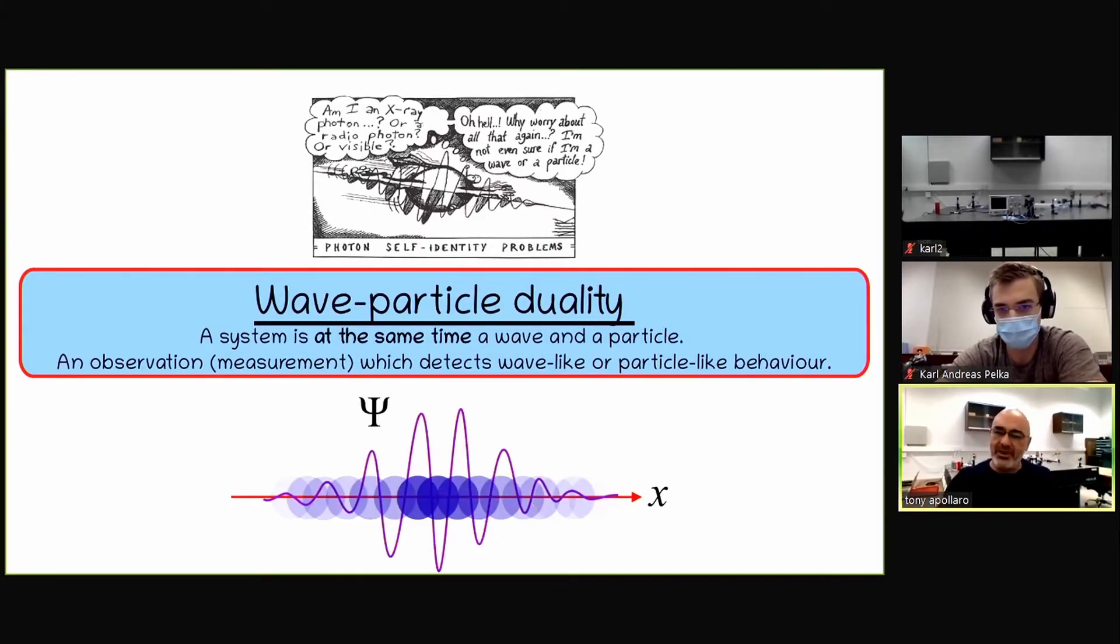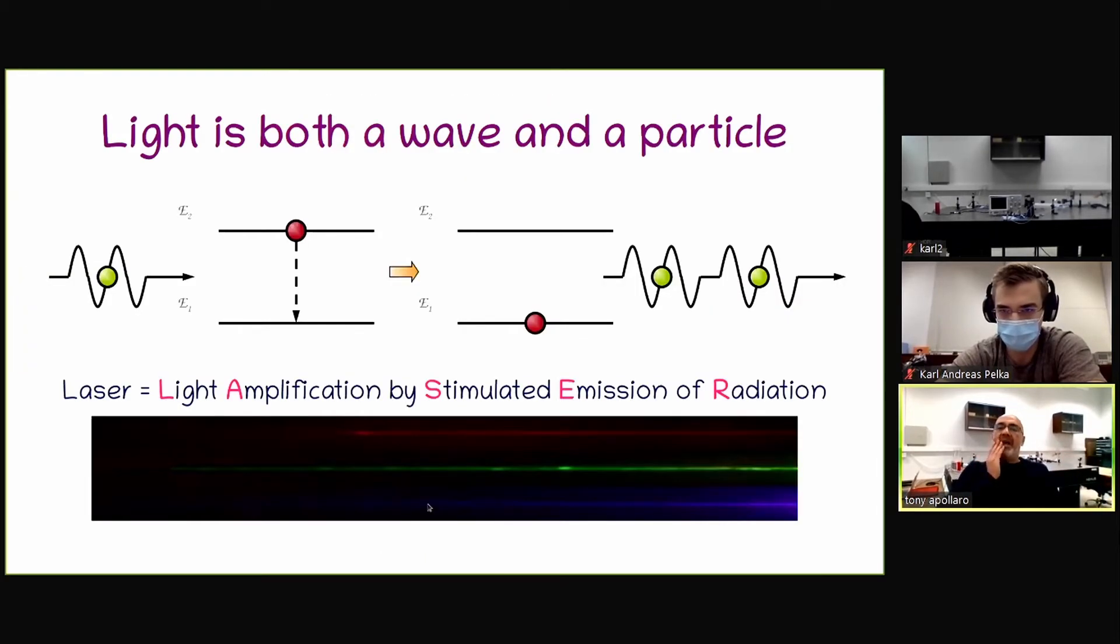Actually, when we have to think at the quantum particle, it is something that spreads over a lot of space. And it is represented by an object called phi. We will not enter into it. That is a wave function. Now, what does this wave-particle duality mean, actually? And where do we see it? We see it, for instance, in light.